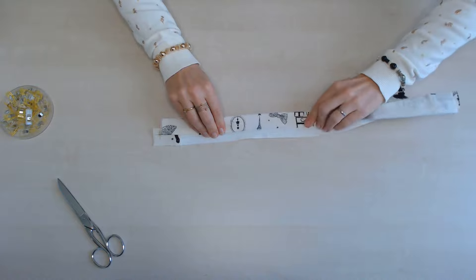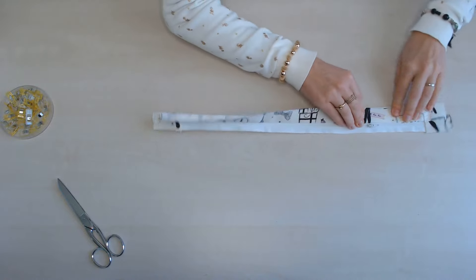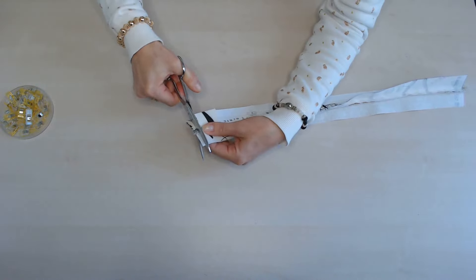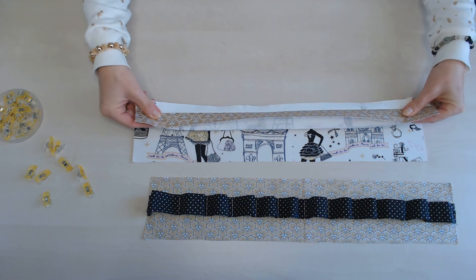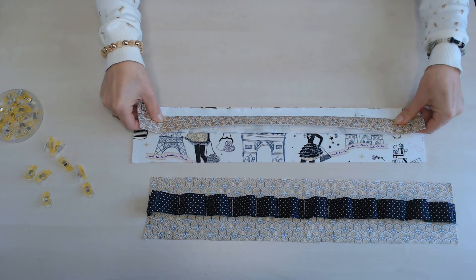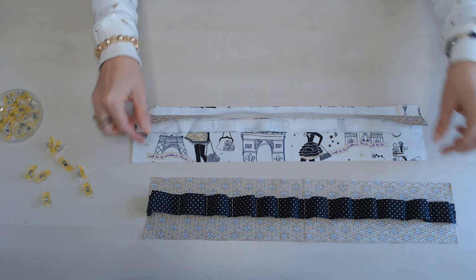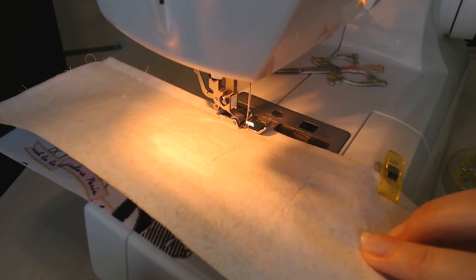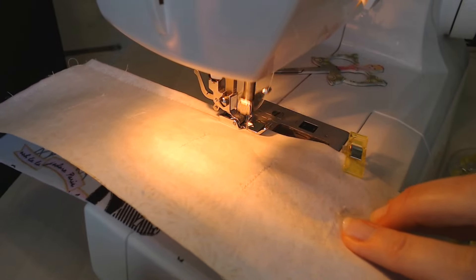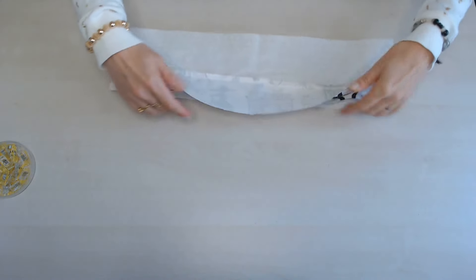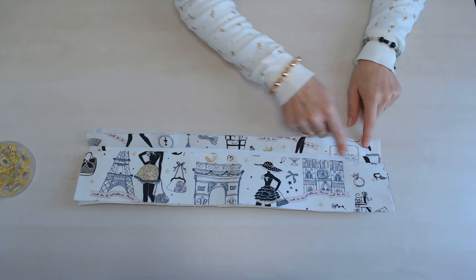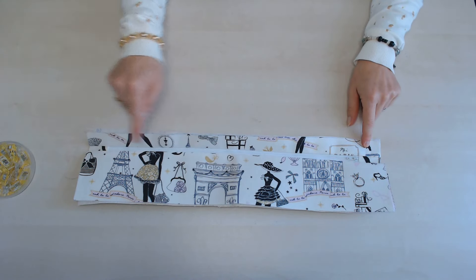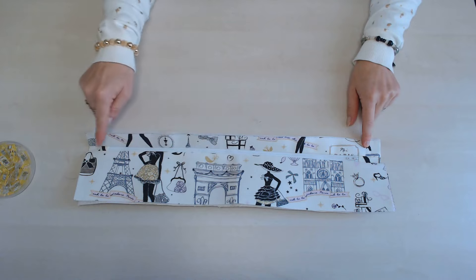On ouvre, on égalise et on assemble l'autre côté de la fermeture avec la partie basse, donc la partie de 10 cm. Et pour finir, on va faire une surpiqûre de chaque côté de la fermeture à glissière.